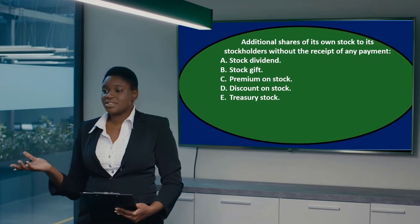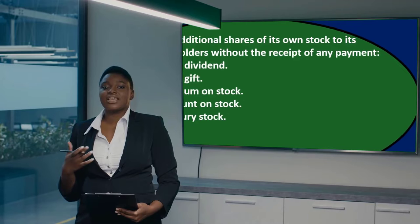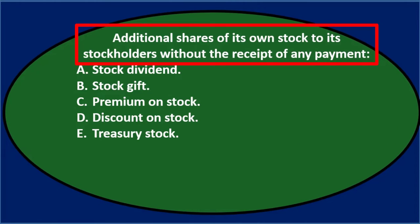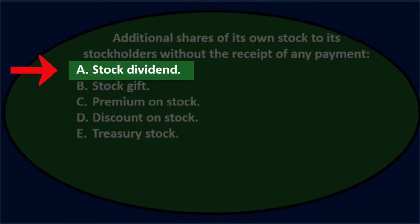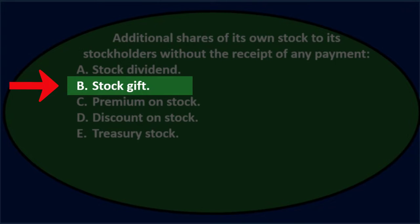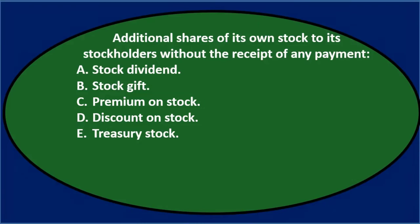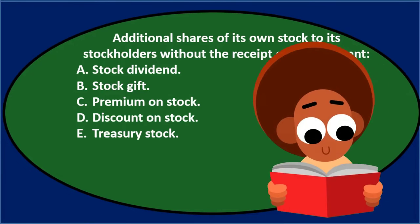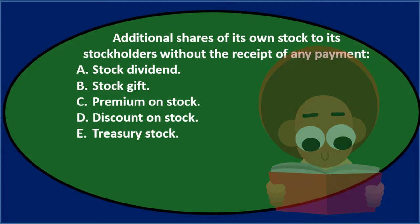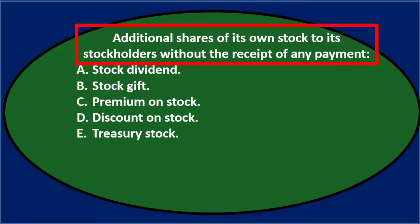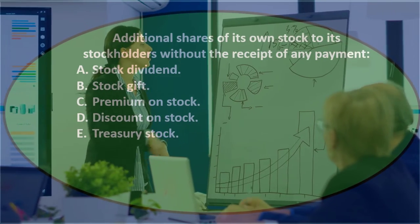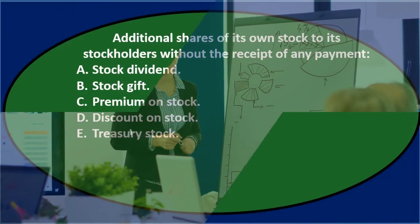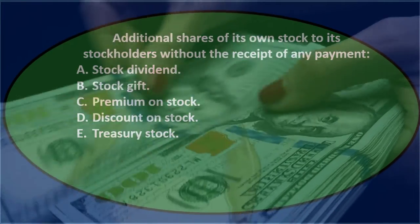In this presentation we will take a look at multiple choice questions related to corporations. First question: a corporation issues additional shares of its own stock to its stockholders without the receipt of any payment. We're giving additional shares of our stock to the stockholders — the owners of the company — and we're not getting payment or cash or any other form of payment for it.